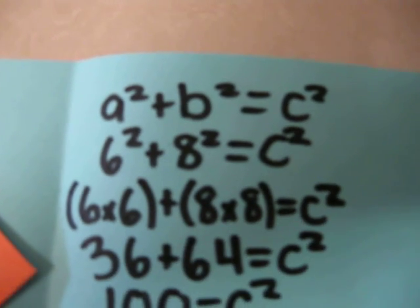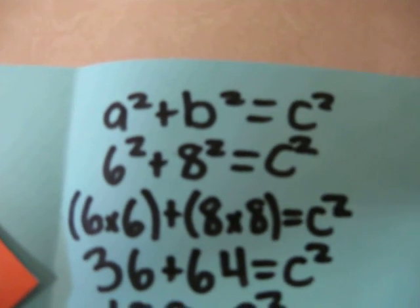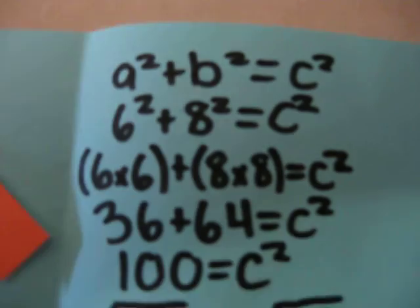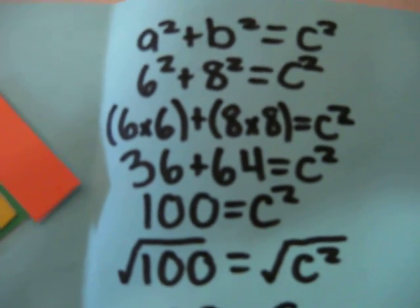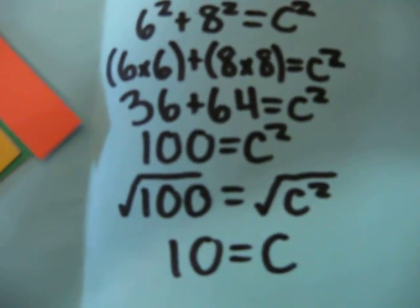6 squared plus 8 squared equals C squared. Put that there. So 6 times 6 and 8 times 8. Then 36 plus 64 equals 100, and the square root of 100 is 10.